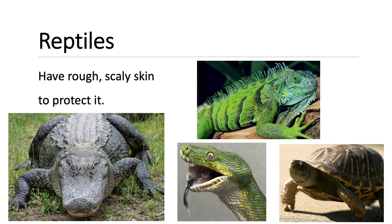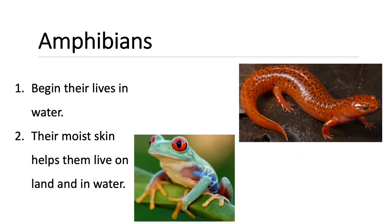This is an alligator. An alligator has rough, scaly skin. This is a turtle. A turtle is a reptile — it has a hard shell. Turtles have hard shells in order to protect themselves from other animals.